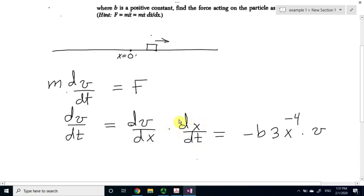Remember now, dx by dt is just the velocity, and dv by dx can be found from deriving the equation above. So dv by dx will be negative 3b times x to the minus 4,